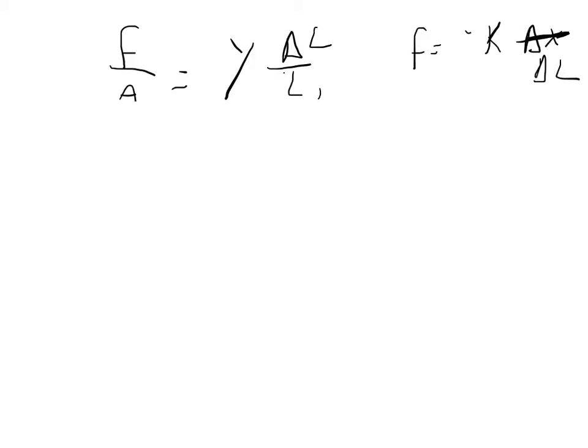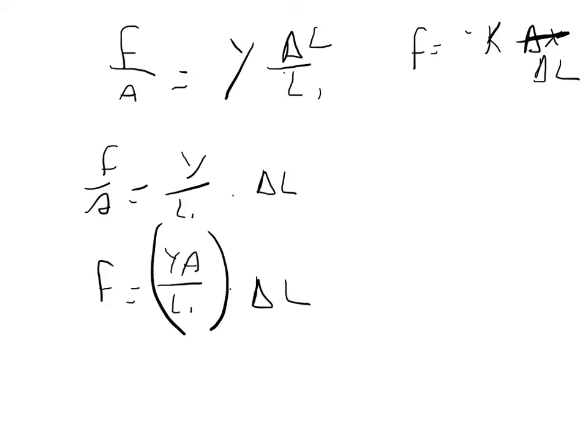We can actually rearrange our equation to make it look like a spring. So we say force over area equals Young's modulus over the original length times the change in length. Then we multiply both sides by A, and we get force equals Young's modulus times area divided by the original length times the change in length. So our k would be Young's modulus times the area over the original length.